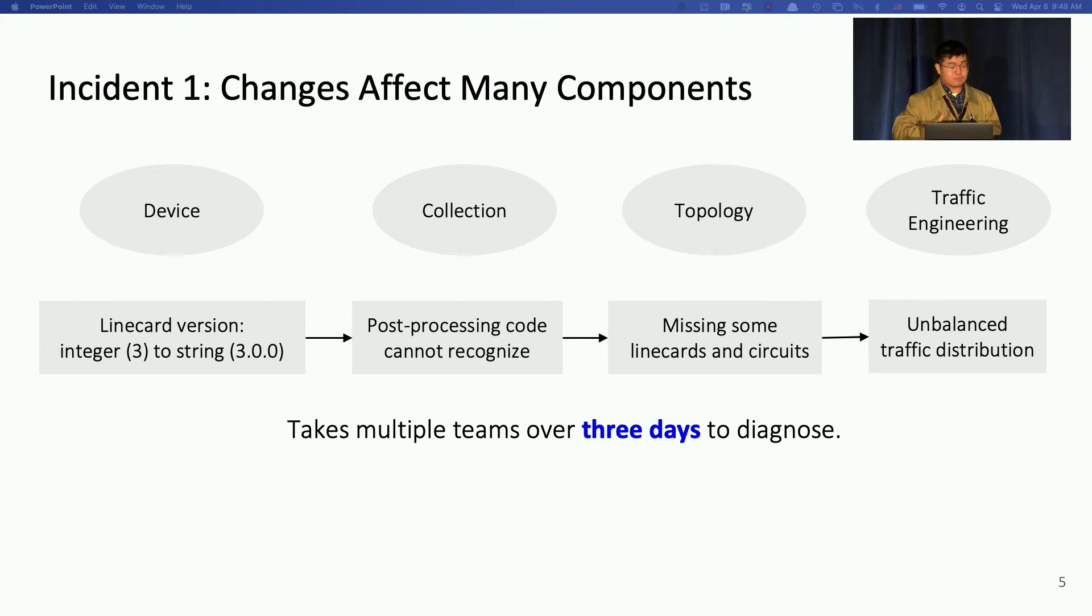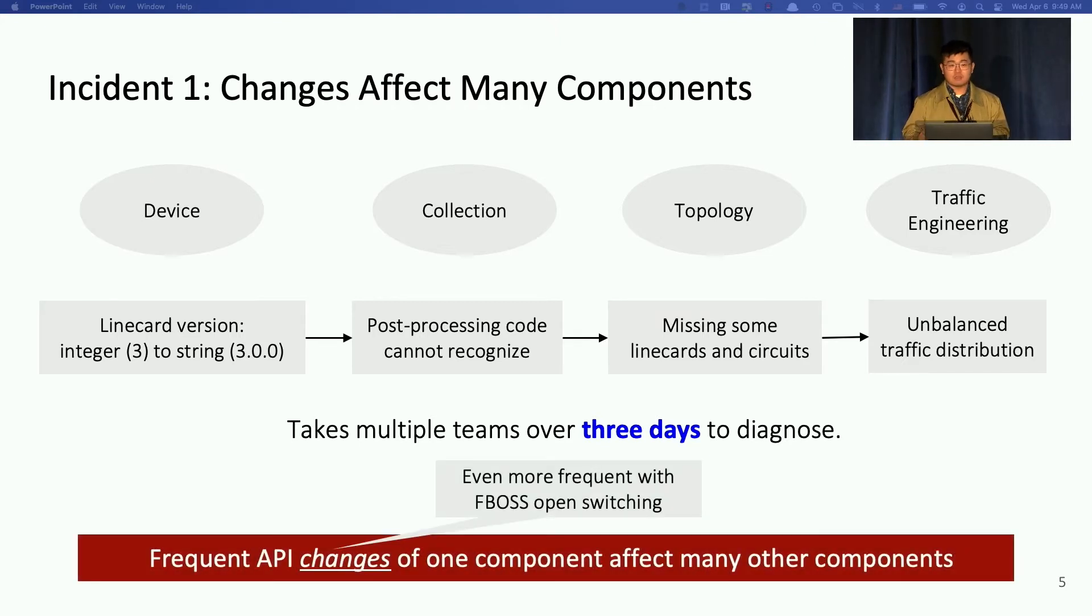So here there's some miscommunication between this vendor proprietary code and our telemetry system. But those problems sometimes won't reveal until, for example, here the traffic engineering team found this unbalanced traffic problem. So this is not a one-off case given many vendors and software versions coexisting in our network. Especially our ongoing effort of open switching that even have weekly updates. So these frequent API changes of one component could affect many other components causing challenges for our telemetry system.